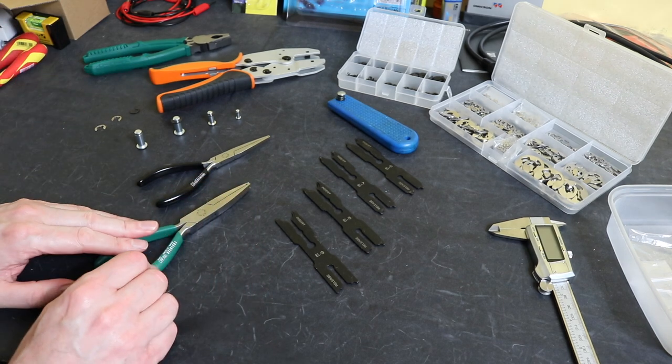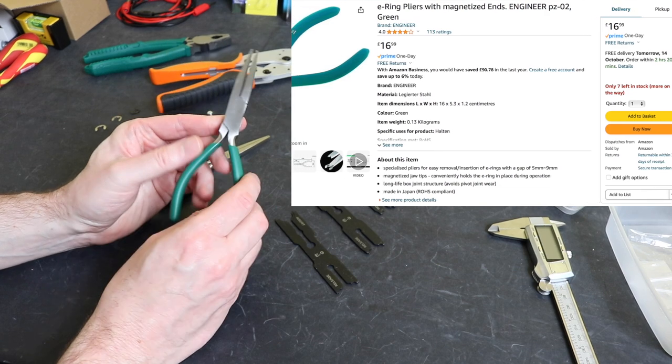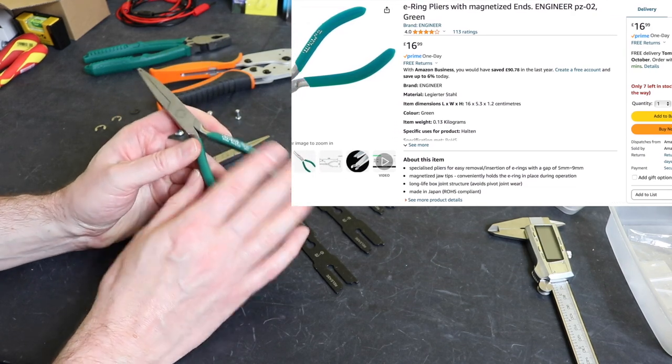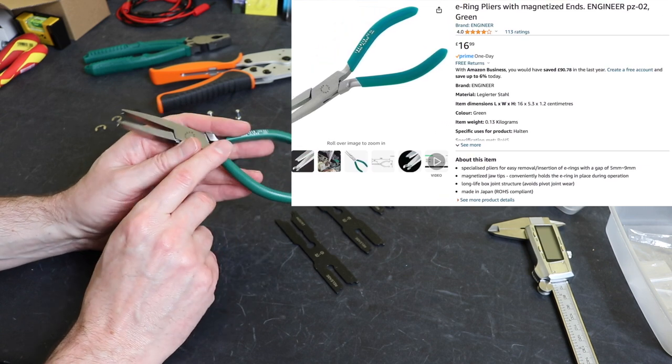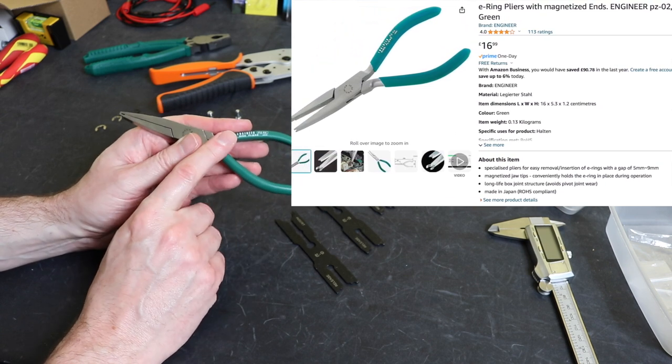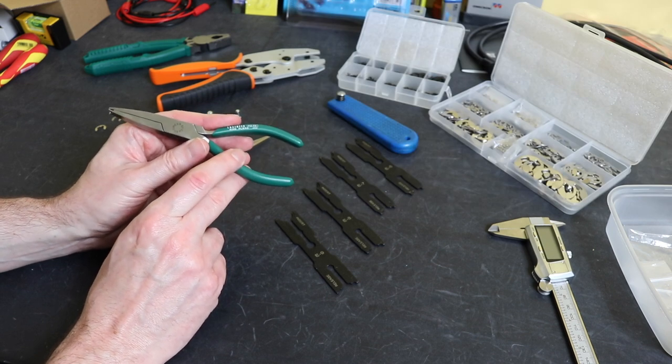The PZ-02 here is also from Engineer, same build quality, same dipped handles but different colored for the PZ-02. This also retails for around 16 to 20 pounds from Amazon and covers E-clips from E5 to E9.